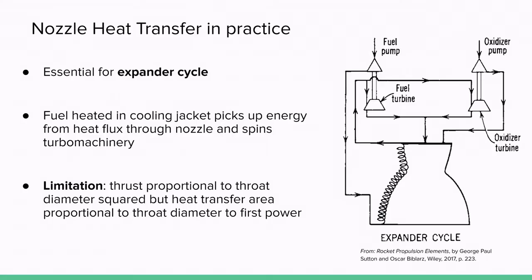So even though there's the issue of high heat flux in a rocket nozzle throat section, the waste heat produced from combustion is actually very beneficial and can drive the entire cycle, such as the expander cycle shown on the right. In this cycle, fuel, typically hydrogen,